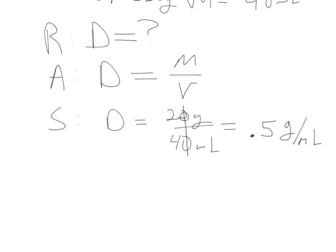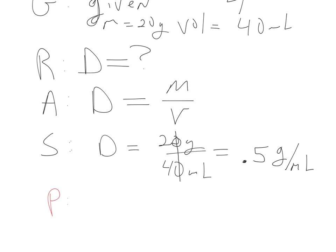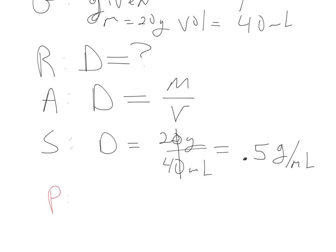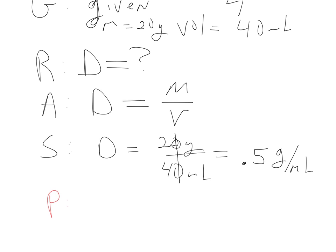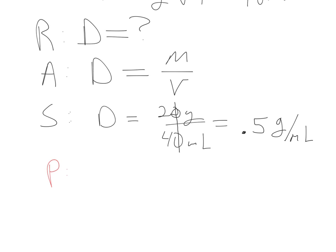Now the last step is the P, which stands for paraphrase. And so what you do here is you use the solution in a sentence. It's also a good time to check your work. So does this make sense that an object with a mass of 20 grams in a volume of 40 milliliters has a density of only 0.5 grams per milliliter? Yeah, I think it does, because if the mass is about half the volume, then it would make sense that the density is 0.5. So we're going to just go ahead and restate that in the sentence.